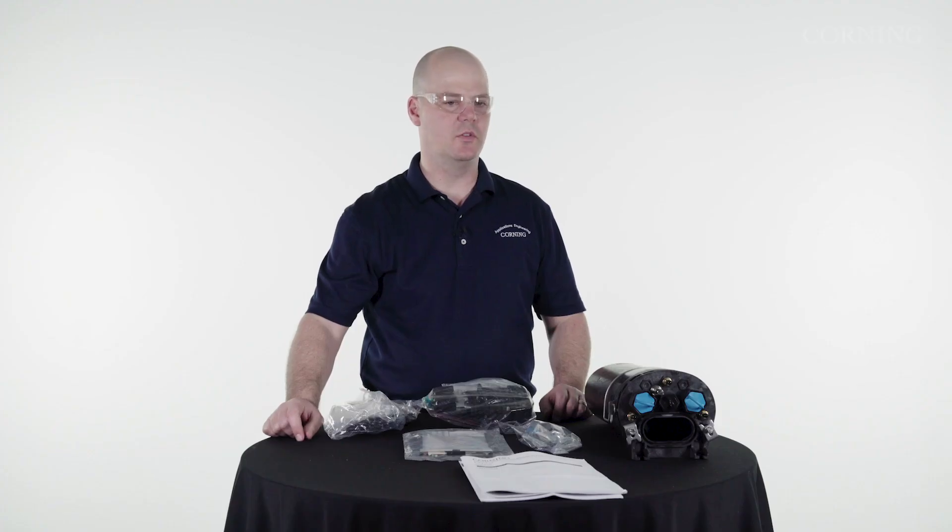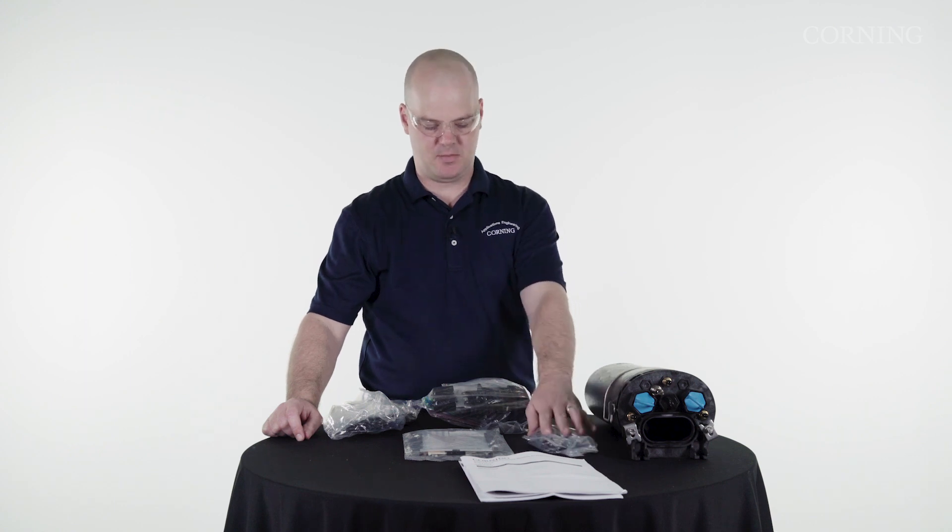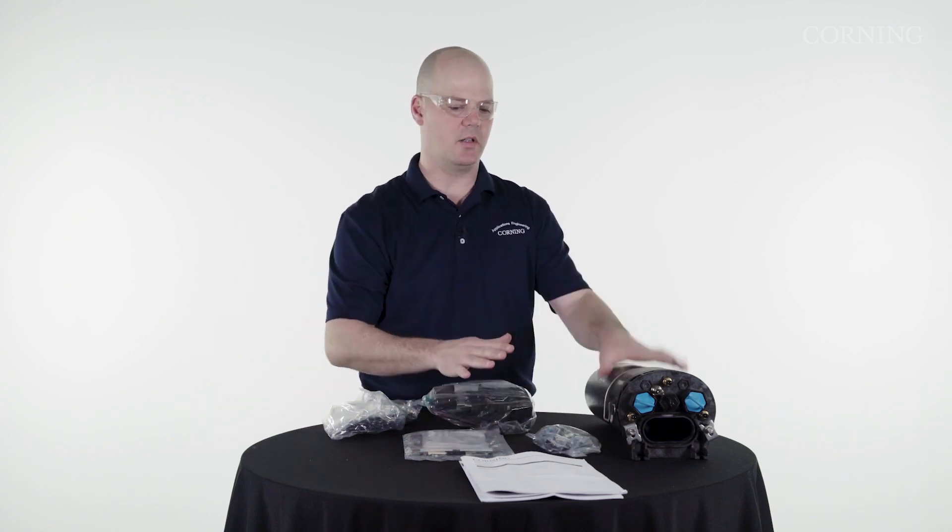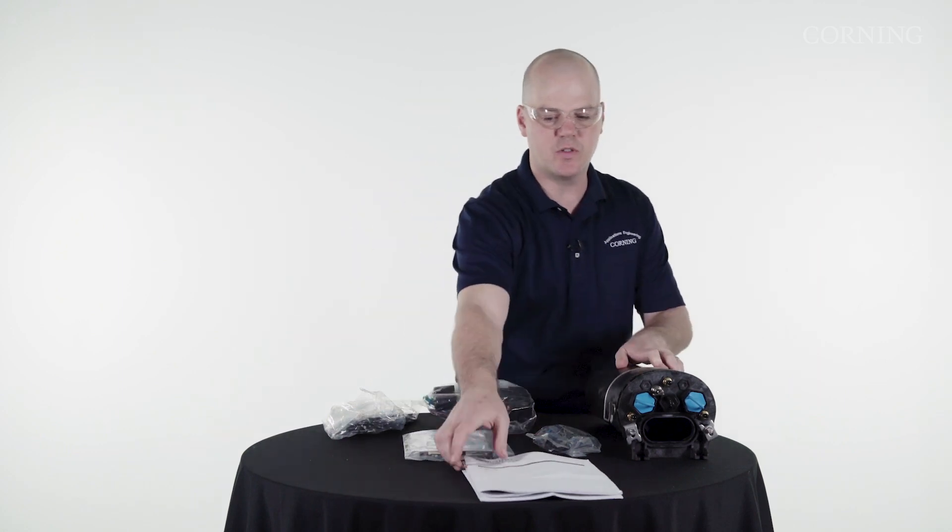In this video, we're going to install loose tube cable into a FDC08S closure. This particular model ships with a single e-cam, double e-cam, and a tray. Here's the closure. I'm going to open this up. It also has instructions for each one of those.